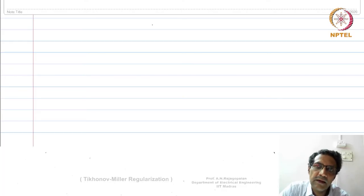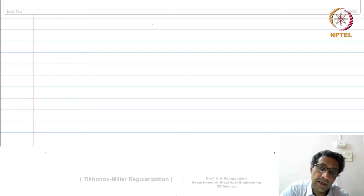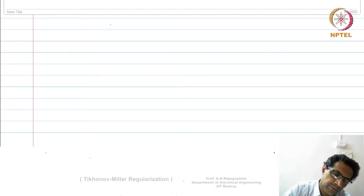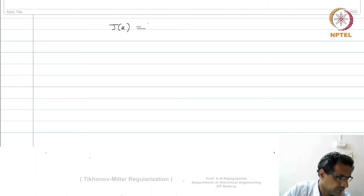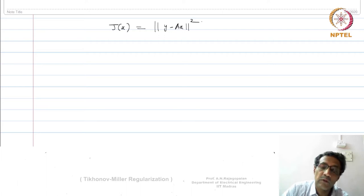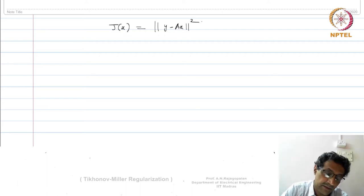The idea is to really understand what we mean by regularization, right, regularizing a solution. Now, if we simply revisit the least squares problem, where we had J(x) = ||y - Ax||², this is what we solved and with the least squares solution we got some answer.